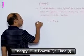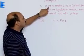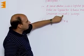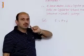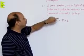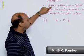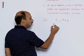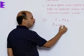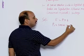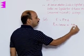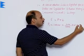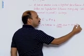Here power is in watts, but the question asks us to calculate energy in kilowatt hours. So first we have to convert watts into kilowatts. We write P1 is equal to 100 watt, which can be written as 100 divided by 1000 kilowatt, that is 0.1 kilowatt.